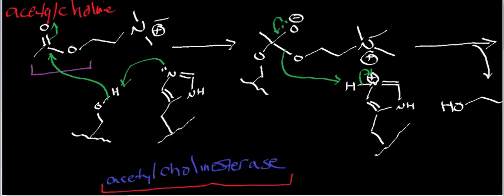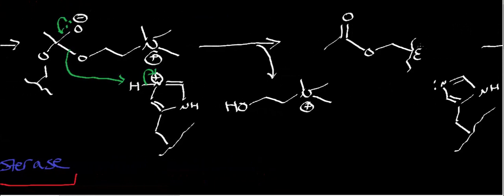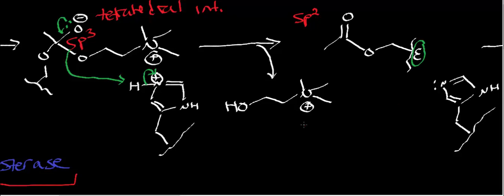So now what we have is we have this intermediate called an acyl enzyme intermediate. And I went ahead and put this E here for enzyme just to denote that that serine residue is part of the enzyme. Over here, we can call this our tetrahedral intermediate. And remember that tetrahedral intermediates, those are our sp3 hybridized geometry intermediates, whereas with our acyl intermediates, those are going to be sp2 hybridized.